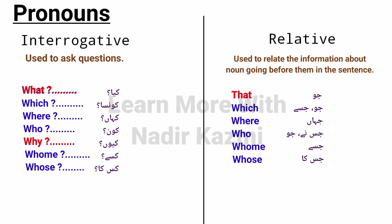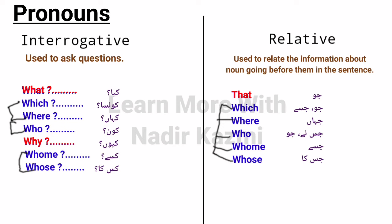Now let's define interrogative and relative pronouns together, because we also need to differentiate them. Interrogative pronouns are used to ask questions — yeh sawal poochne ke liye istamal kiye jate hain. Whereas relative pronouns are used to relate information about a noun that comes before them in the sentence. Interrogative pronouns include: what, which, where, who, why, whom, whose — and since these are used for asking questions, they are always followed by a question mark.